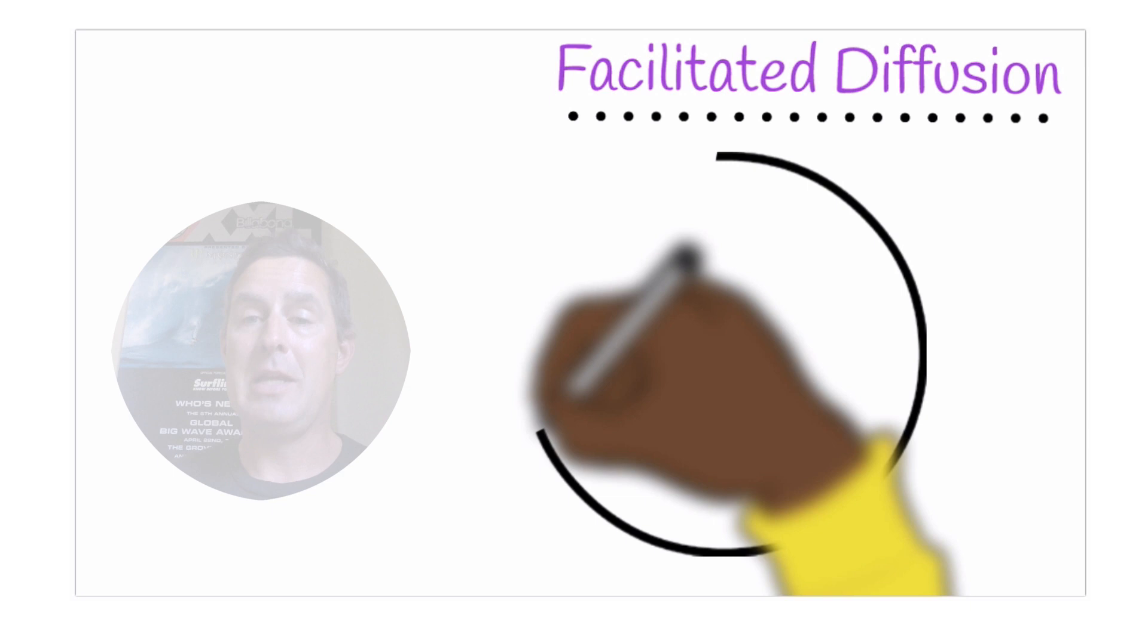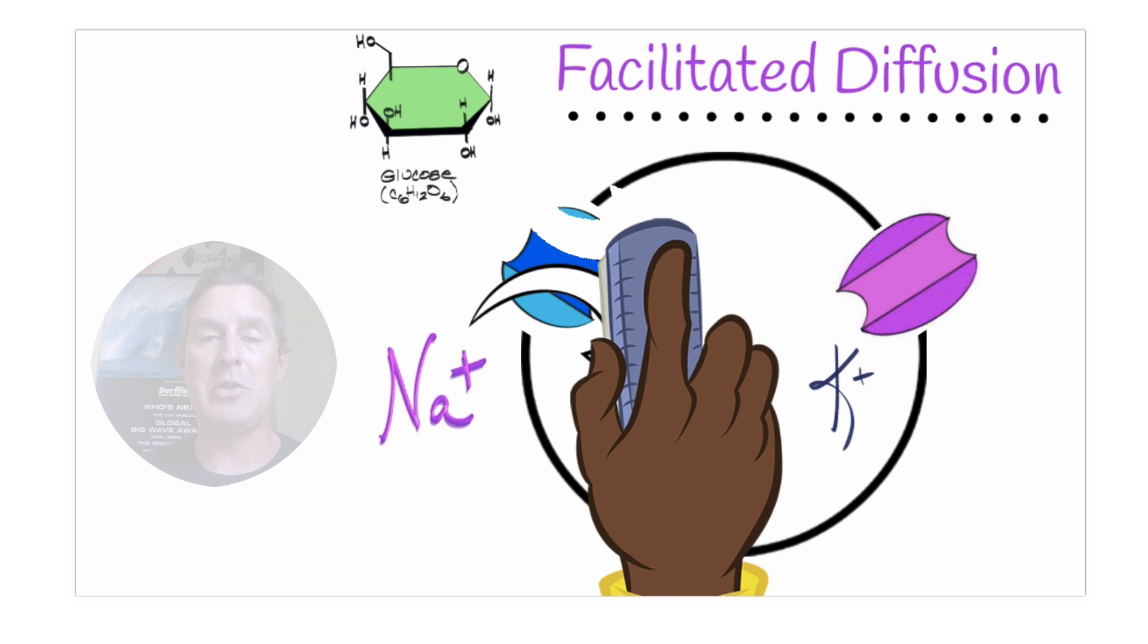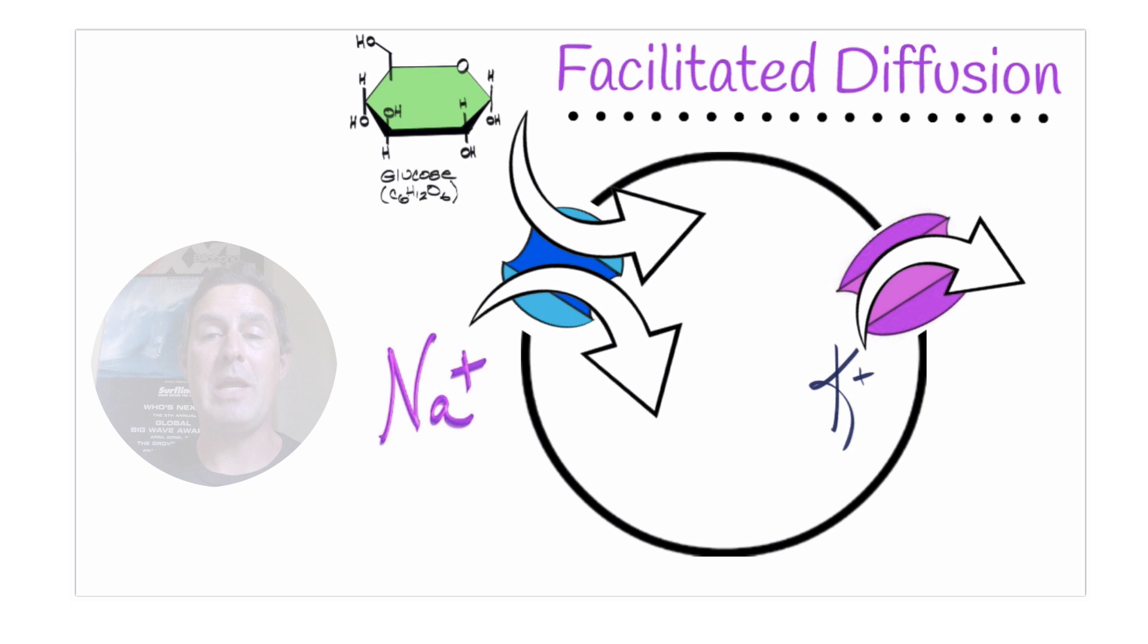Facilitated diffusion, on the other hand, it is passive. It's moving high to low. But due to the polarity or charge of the entity moving, it requires a channel. Sodium, moving high to low, requires a channel. Glucose, which is a polar molecule, requires a channel. And potassium, which is a cation, a charged ion, positively charged ion, needs a channel. Facilitated diffusion requires channels. It's a passive process. No energy is required.